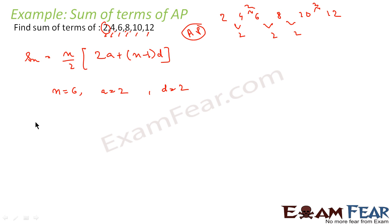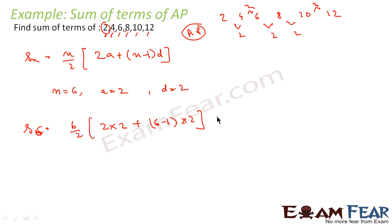We replace these values in the formula: S6 = 6/2 × (2×2 + (6−1) × 2) = 3 × (4 + 5×2) = 3 × (4 + 10) = 3 × 14 = 42. That is the answer.